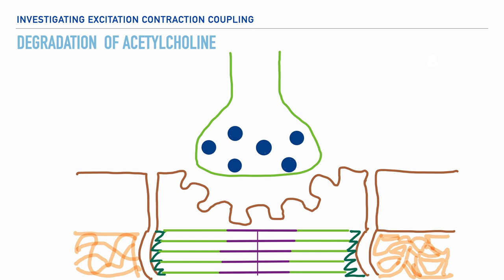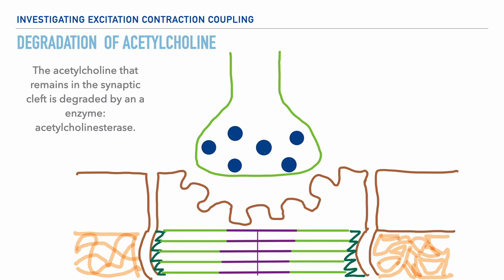Now in the interim, the acetylcholine in the synaptic cleft is degraded. This is completed by an enzyme called acetylcholinesterase. This happens so that acetylcholine cannot rebind to a receptor — because without acetylcholinesterase, it would be possible to have an unwanted extended contraction of a given muscle.